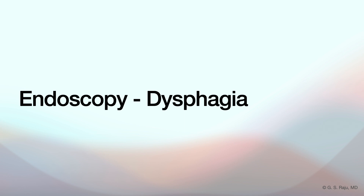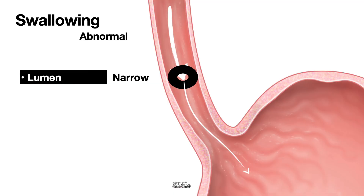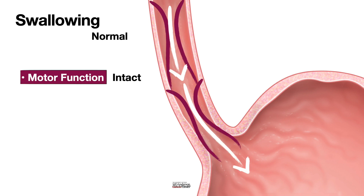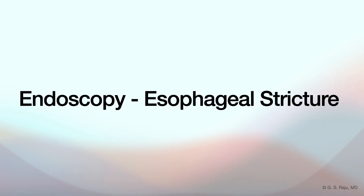Let's move to another common reason for scoping — dysphagia, difficulty swallowing. The source broke it down into two main categories: either the pipe is narrowed — a physical, mechanical blockage — or the muscle isn't working right, a motor problem with peristalsis or the LES relaxing. Normal swallowing means the lumen is wide open, you get a nice coordinated wave of contraction — peristalsis — pushing food down smoothly, and then the LES relaxes at just the right moment to let it pop into the stomach. Motor dysfunction means that wave is messed up or the LES stays shut — conditions like achalasia are classic examples. Food just gets stuck.